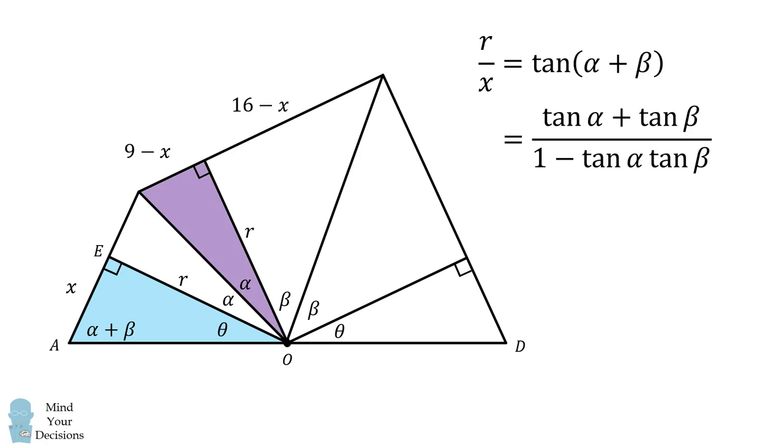From here, we'll look at this purple triangle to get the value of tangent of alpha. It'll be equal to 9 minus x all over r. In the green triangle, we can get the tangent of beta is equal to 16 minus x all over r. We thus focus on these equations, and we'll simplify them.